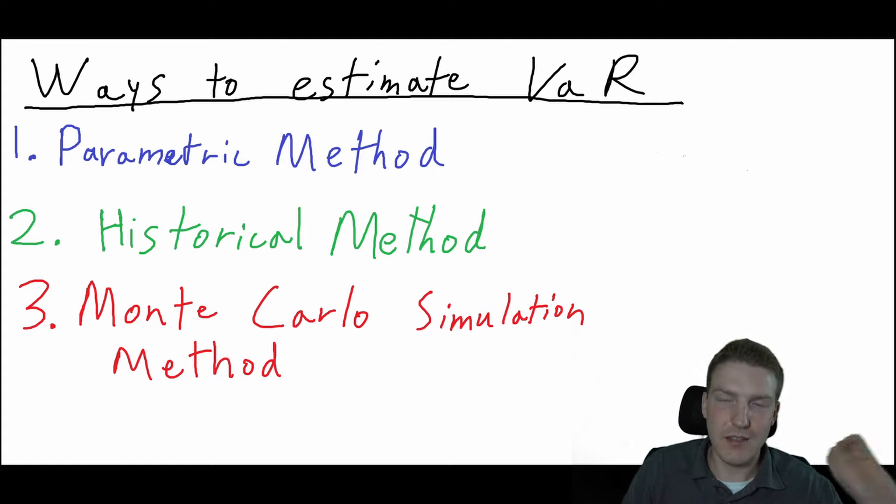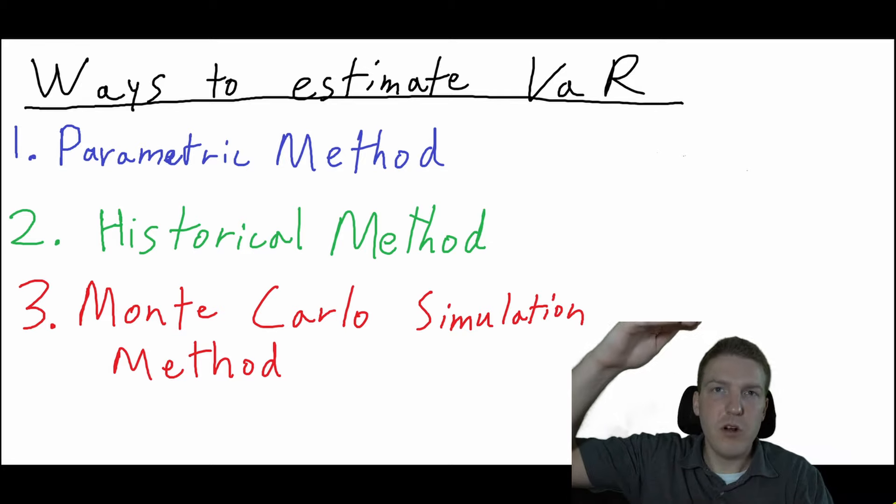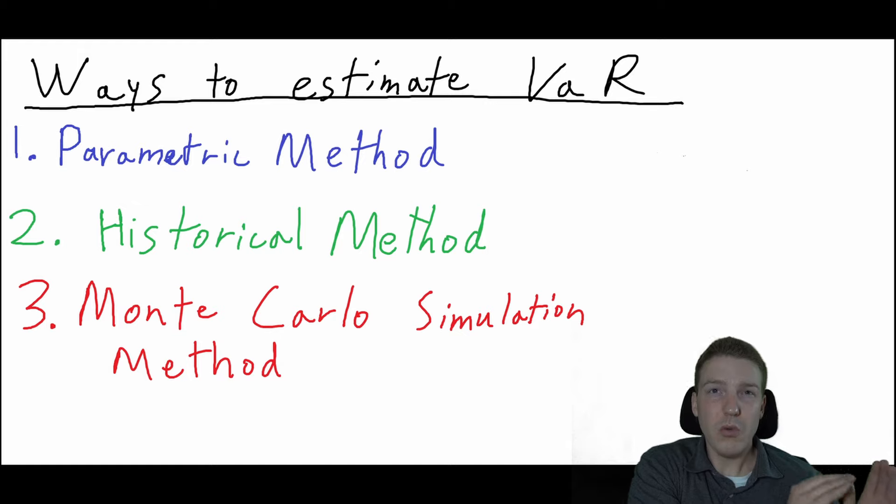The second method is the historical method. I think this is honestly the easiest to understand. Let's assume you want to find VaR for a 100-day period. You look at the previous 100 days—each has a specific return. If you want the 5% VaR (the potential loss at the 5% level), you take all 100 days, sort them by magnitude, find the fifth worst day, and say that's your VaR. It's very simple.